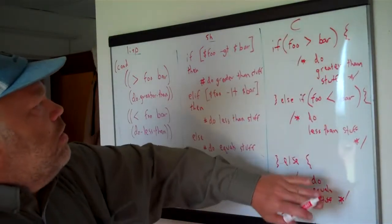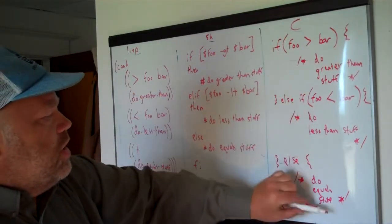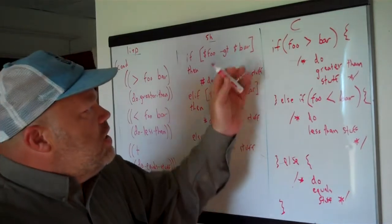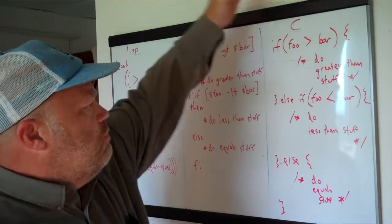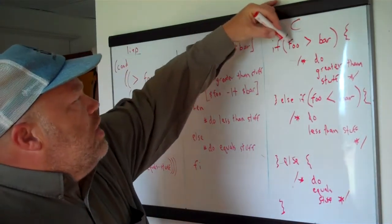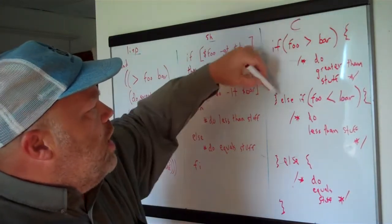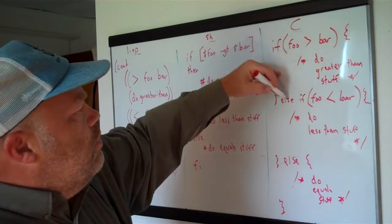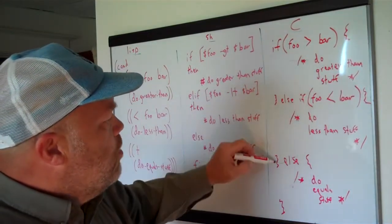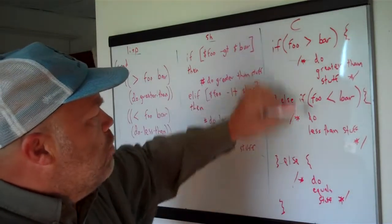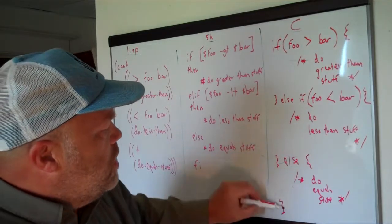This is a piece of C code that doesn't really do anything — it just makes a decision — and I put comments in here to represent the actual work that would be done. If you don't know C, it's pretty straightforward. You're saying if foo is greater than bar — foo and bar are just variables — then do the stuff in the curly brackets. If it's not, then you say else if foo is less than bar, do the stuff in those curly brackets. Else, if neither of those is true, the only other possibility is that foo and bar are equal, so do the stuff in those curly brackets.